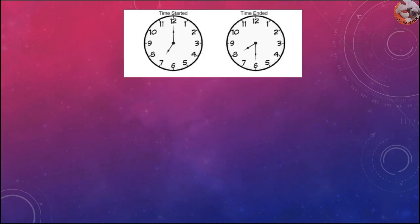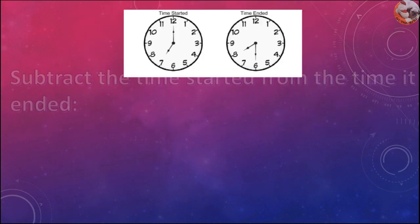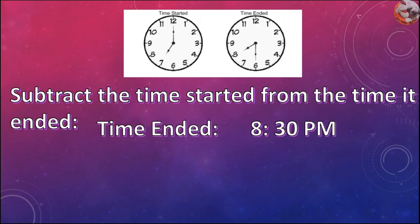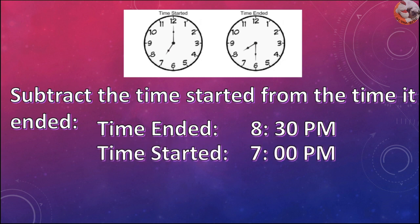How are we going to find out the elapsed time? Subtract the time started from the time it ended. Time ended is 8:30pm. Time started is 7pm. Subtract 7pm from 8:30pm.